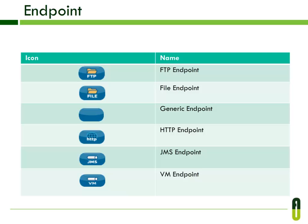Here you can see the different types of endpoints. Generally, endpoints send and receive data and are responsible for connecting to external resources and delivering messages. The FTP endpoint reads files from an FTP server and carries all the information needed for an FTP connection. The host and port values are required.